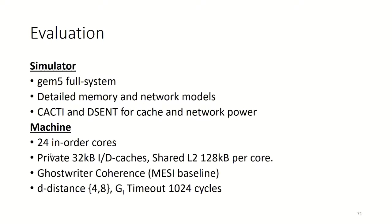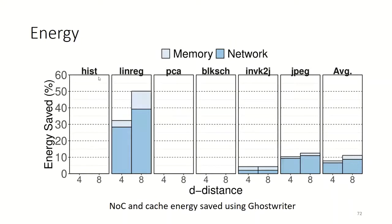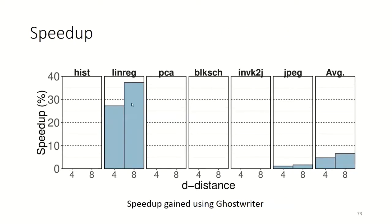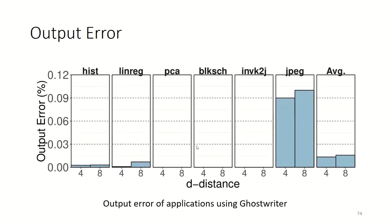We evaluate Ghostwriter using Gem5 full system simulation with 24 in-order cores, testing d-distance settings of 4 and 8. This chart shows the dynamic energy saved within the memory hierarchy and interconnection network. Linear regression shows considerable false sharing due to migratory sharing patterns, saving up to 50% dynamic energy. JPEG also has considerable savings due to producer-consumer sharing and migratory sharing. On average, we achieve 11% dynamic energy savings. For speedup, linear regression shows the most speedup at up to 37%, with an average of 6.5%. Ghostwriter introduces a maximum of only 0.1% error in the JPEG benchmark, which is notably low.